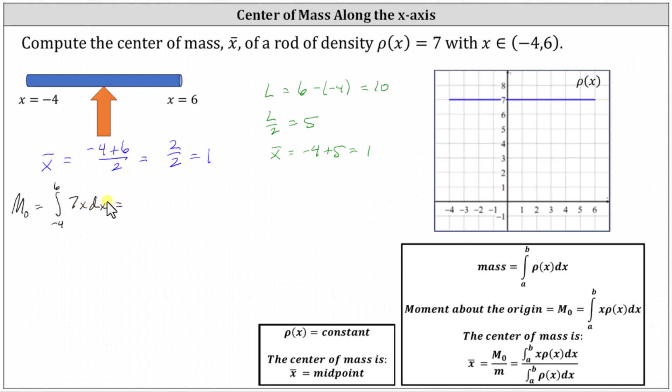Integrating we have seven times x squared divided by two, or seven halves x squared. Let's go ahead and factor out the seven halves.